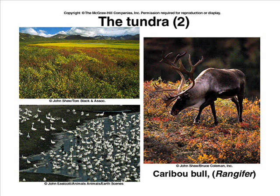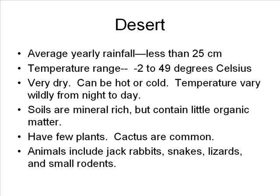These regions have permanently frozen subsoil, so only small plants can grow because roots cannot dig very deeply into the ground. Typical organisms include migrant birds, musk oxen, caribou, and arctic foxes.